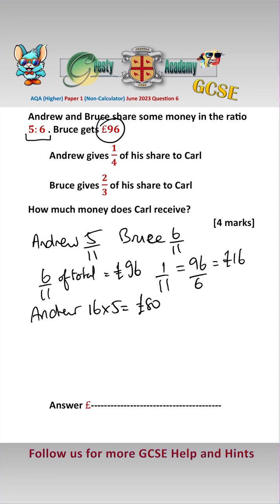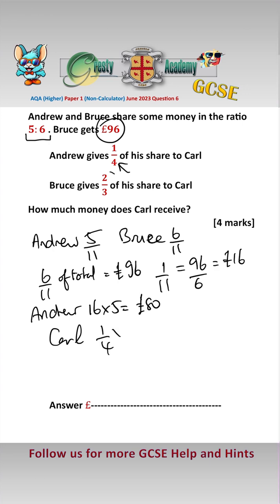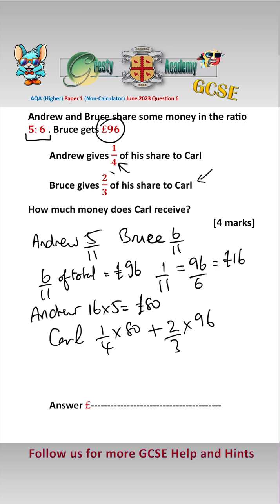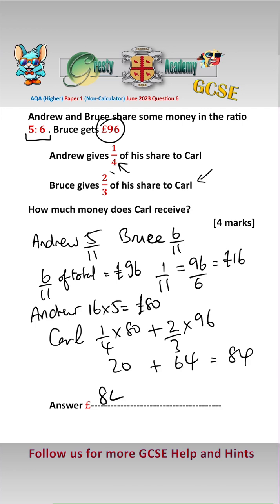So therefore, Carl gets a quarter of Andrew's, which is a quarter times 80, and he gets two thirds of Bruce's, which is two thirds times 96. A quarter of 80 is 20 and two thirds of 96 is 64. 20 plus 64 is 84, so Carl gets £84.